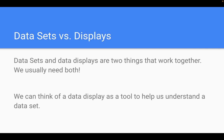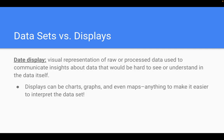Well, data sets and data displays are two things that work together, and we usually need both. We think of a data display as a tool to help us understand a data set. A data display is a visual representation of raw or processed data used to communicate insights about the data that would be hard to see or understand in the data itself. So displays are things like charts, graphs, or even maps. These are just simply things to make the data set easier to interpret.